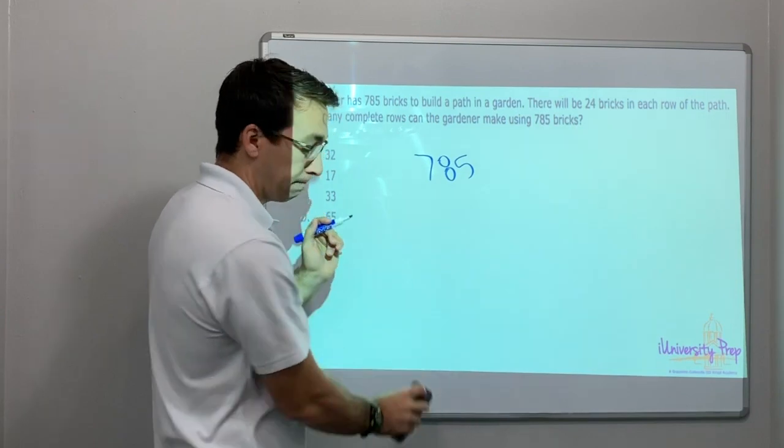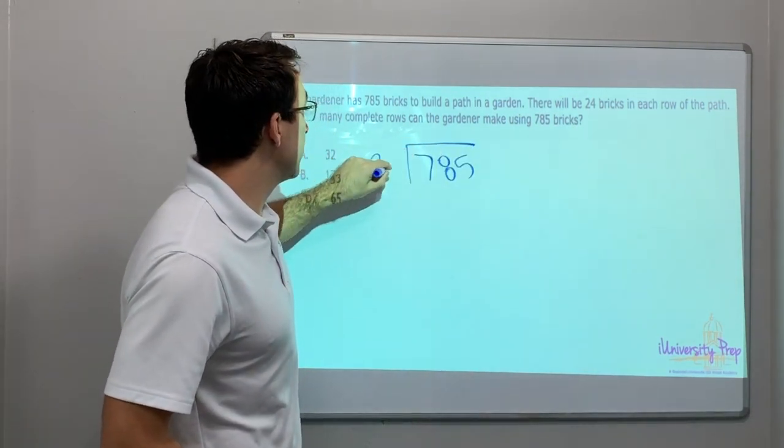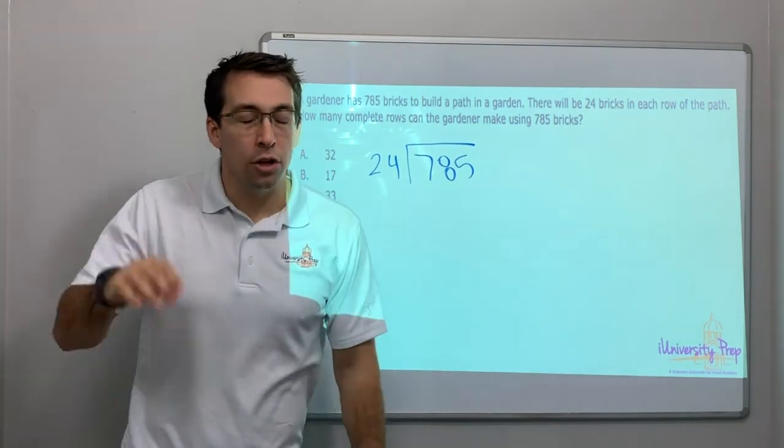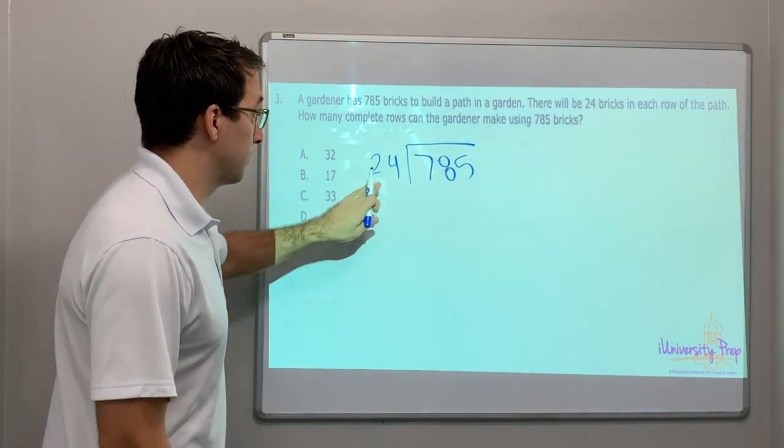So we have to divide. We have to divide. 785 divided by 24. You must do lots of scratch work when you're doing division.